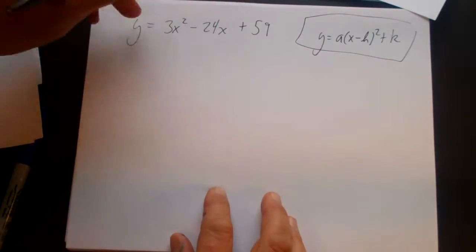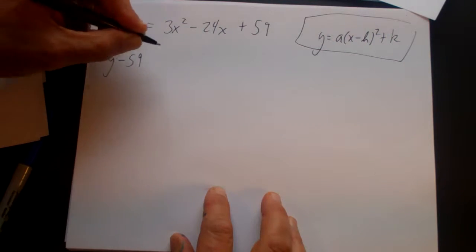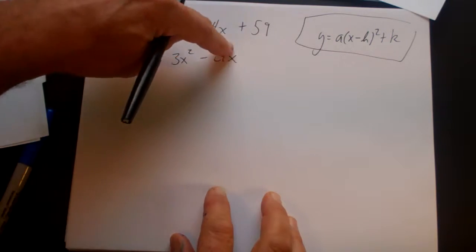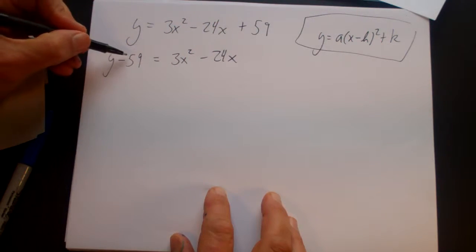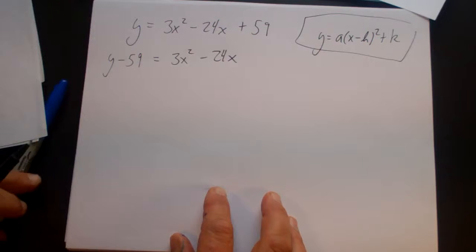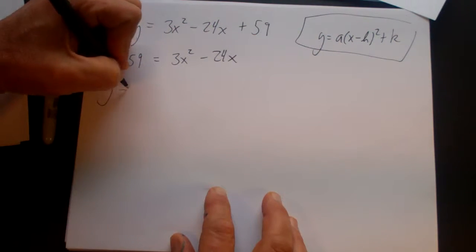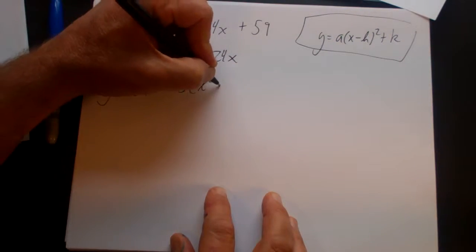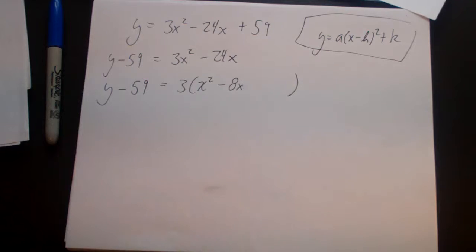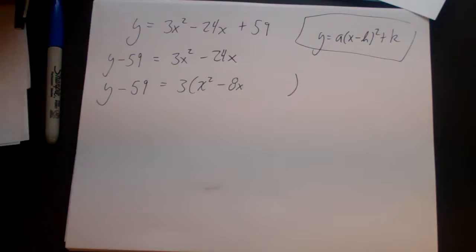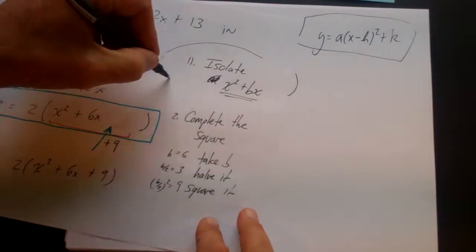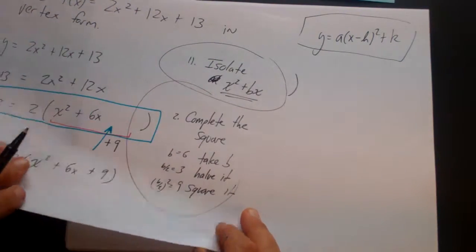So the first thing we do is move the 59 over here. And then I'm going to factor a 3 out. You could divide everything by 3, but then you'd get 59 thirds and a y over 3. It'd be kind of a mess. So I would just factor a 3 out on this side. And then I would leave a gap right here. And so that's your first step. Remember what our steps were? Our first step was to isolate x squared plus bx. And then our second step is to complete the square.